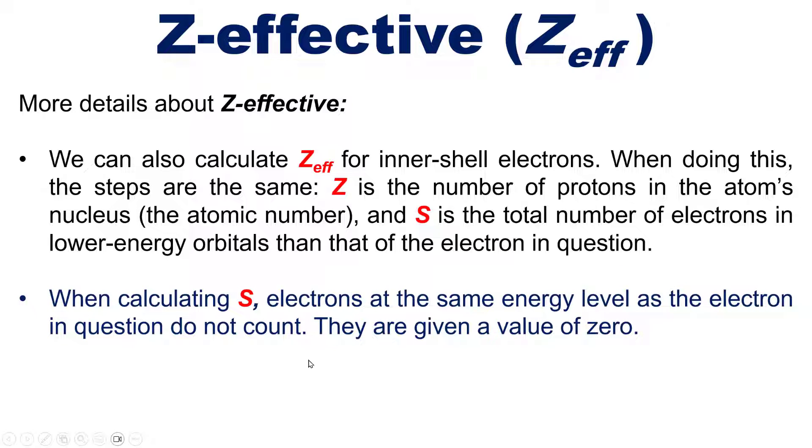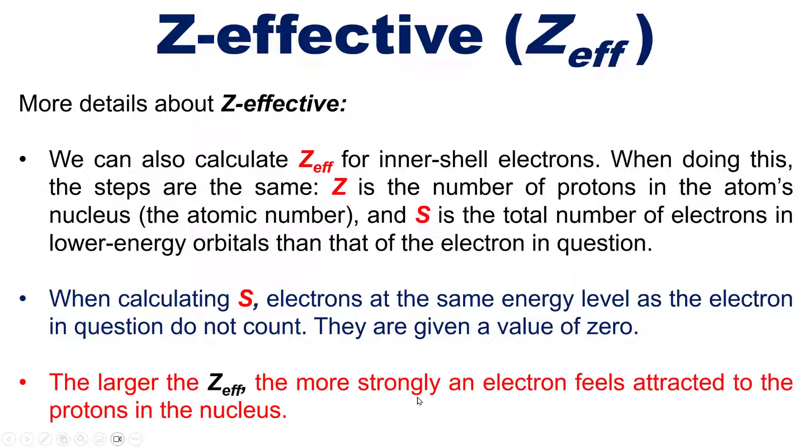Additionally, when calculating S as the shielding constant, the electrons in the same energy level as whichever electron you're calculating for do not count—they're all given a value of zero. We're only counting the electrons in lower energy levels. Furthermore, the larger the Z-effective, the more strongly an electron feels attracted to the protons in the nucleus.